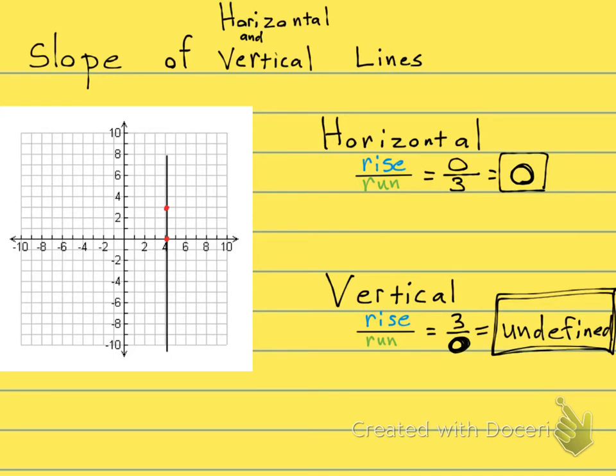Okay, a lot of people will just memorize this. The slope of a horizontal line is zero. The slope of a vertical line is undefined. Let me show you an easy way to remember that.